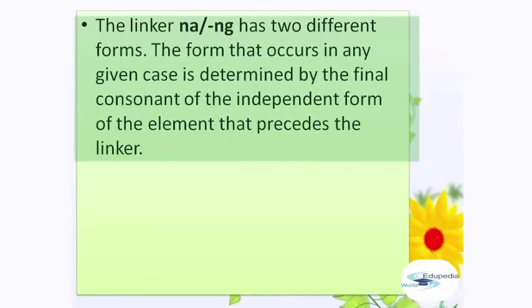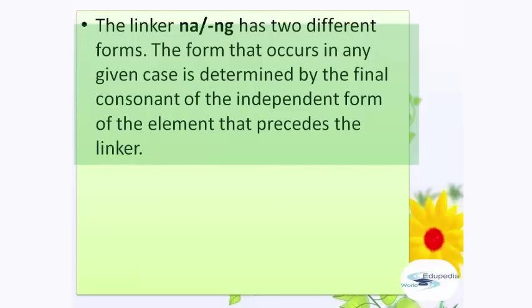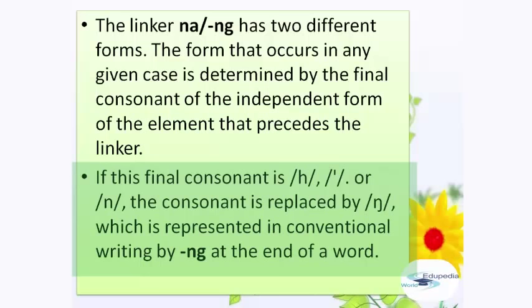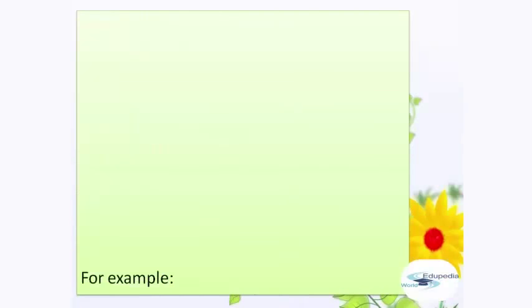The linker na or nang has two different forms. The form that occurs in any given case is determined by the final consonant of the independent form of the element that precedes the linker. If its final consonant is h, glottal stop, or n, the consonant is replaced by nang, represented in conventional writing as ng at the end of a word. For example: 'mabuti' (good) + linker = 'mabuting'; 'mayungi' (modest) + linker = 'mayunging'; 'mayaman' (rich) + linker = 'mayamang.'